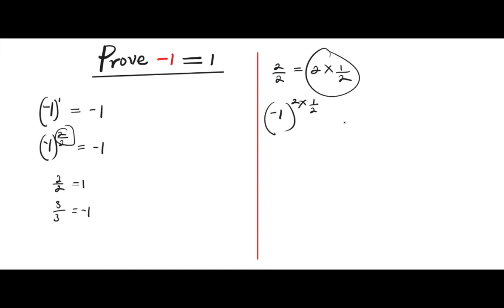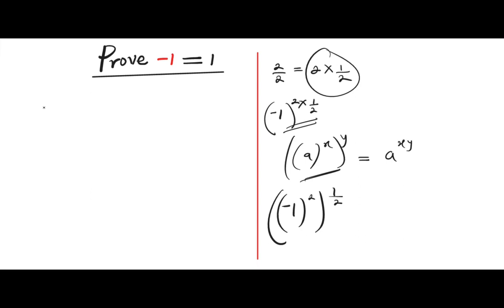That being said, from the law of indices, we know a raised to the power of x raised to the power of y equals a raised to the power of x times y. This is an established identity. So if we want to write this in this form, we're going to have negative 1 raised to the power of 2. Now let's proceed on the side of the board.